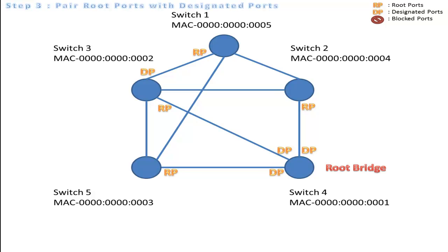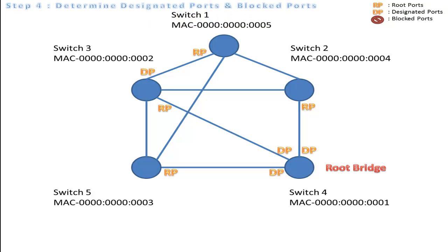For all the remaining LAN segments in the non-root bridges, we must determine the designated port and the blocked port. To do so, we give priority to those having the lowest cost to the root bridge, then the lowest bridge ID, and then the lowest port ID. Switch 5 is already connected to the root bridge, thus we do not require the network connecting switch 3 and switch 5. Since the MAC address of switch 3 is smaller, we block the port at switch 5.